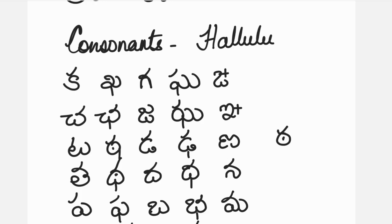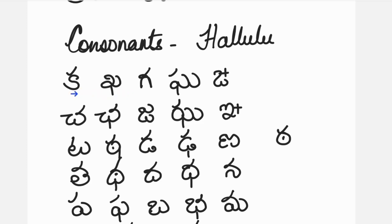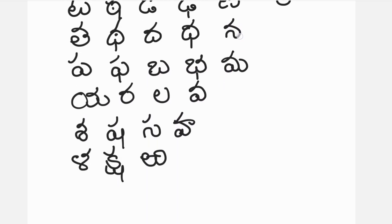Consonants are hallulu in the Telugu language: Ka, kha, ga, gha, nga. Cha, cha, jha, jha, nga. Ta, tha, da, dha, na. Ta, tha, da, dha, na. Pa, tha, ba, bha, ma. Ya, ra, la, va. Sa, sha, sa, ha. La, sha, bandira.